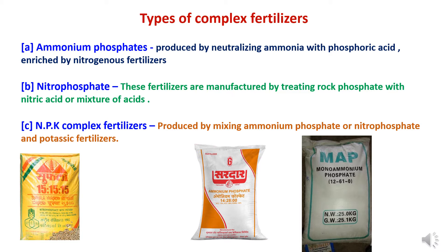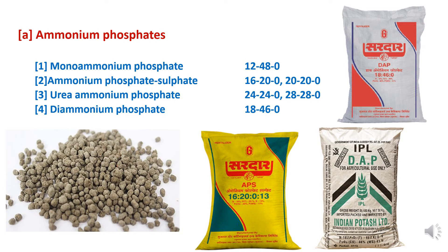Under ammonium phosphates, the examples are: monoammonium phosphate, containing around 12% nitrogen and 48% phosphorus; ammonium phosphate sulfate, containing 16 to 20% nitrogen and 20% phosphorus; urea ammonium phosphate, containing 24% nitrogen and 24% phosphorus, with another variant containing 28% nitrogen and 28% phosphorus; and diammonium phosphate (DAP), which consists of 18% nitrogen and 46% phosphorus. These are the incomplete complex fertilizers.